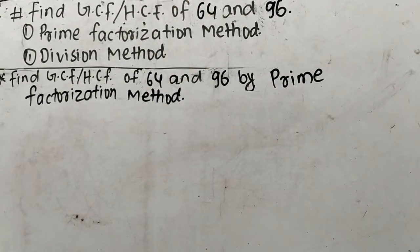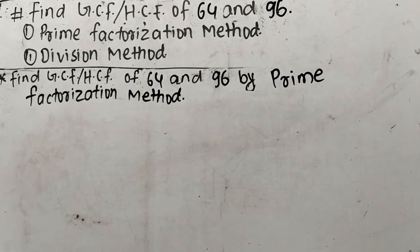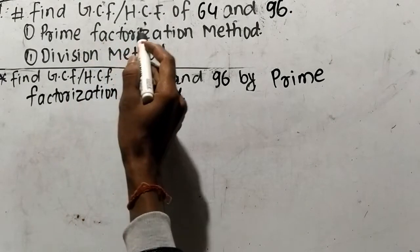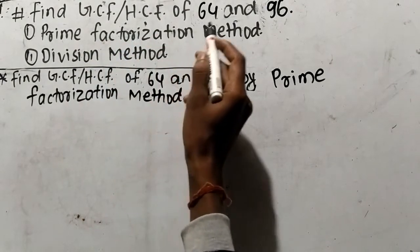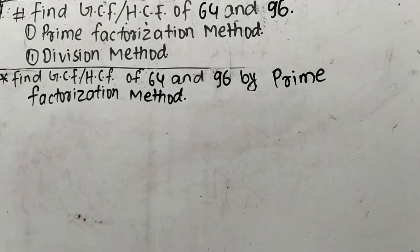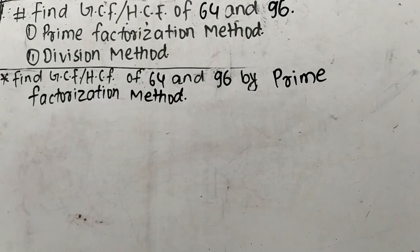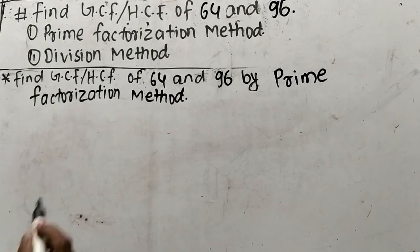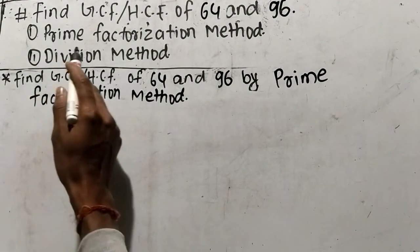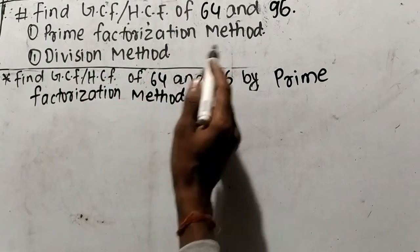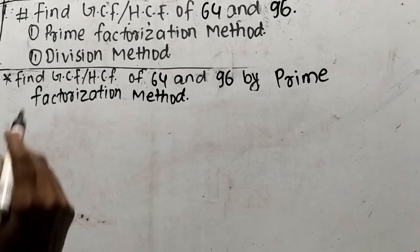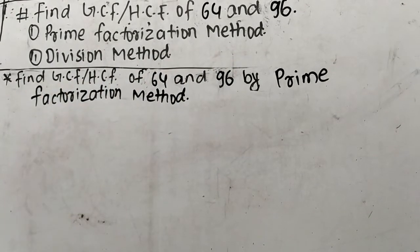Today in this video, we shall learn to find GCF or HCF of 64 and 96. We shall find out GCF or HCF by two methods: first by prime factorization method and second by division method.